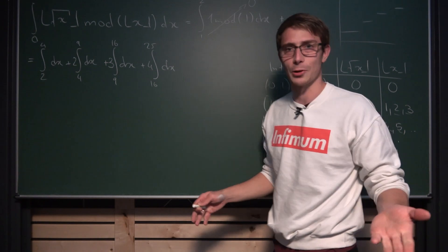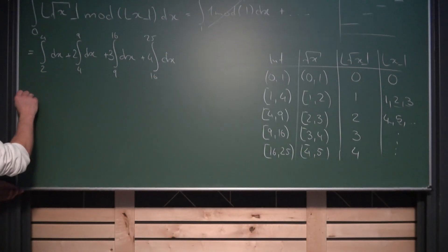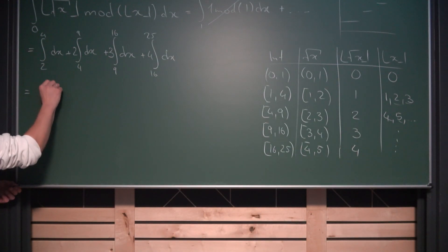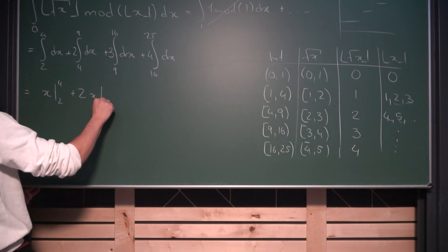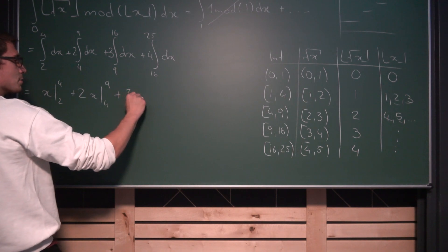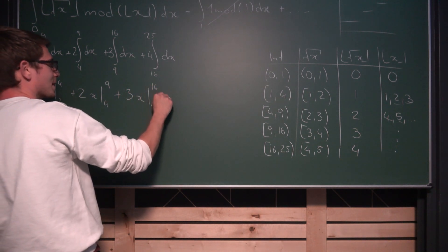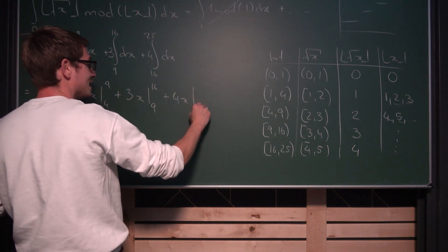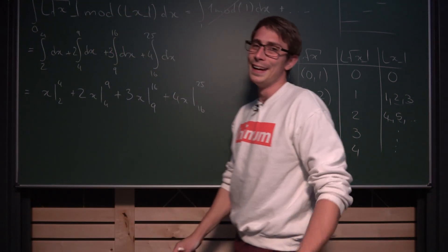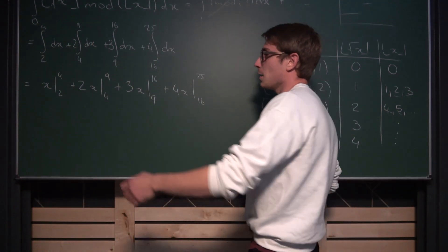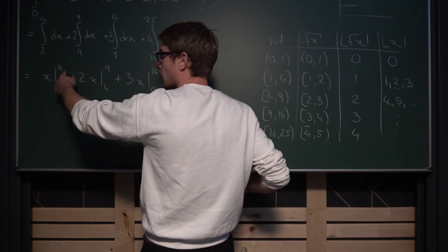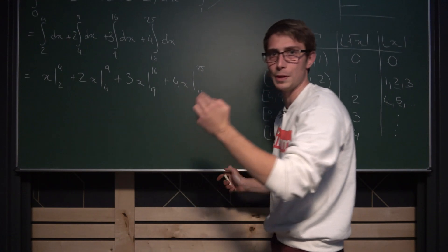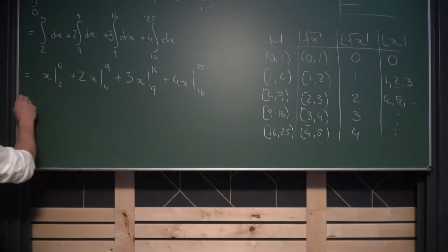And all that's really left to do now is evaluate all those integrals. So integrating just the x is going to result in x. So what we are going to end up with is x from 2 to 4, then plus 2 times x from 4 to 9, plus 3 times x from 9 to 16, plus 4 times x from 16 to 25. And that's really easy to evaluate. If we just have x, then this is just going to be, if we apply the upper and lower bounds, 4 minus 2 is just going to be the difference overall.